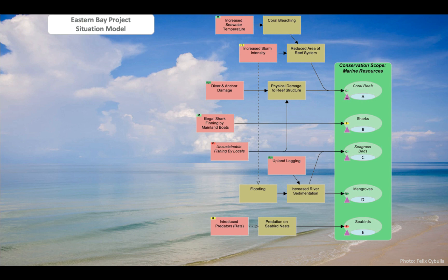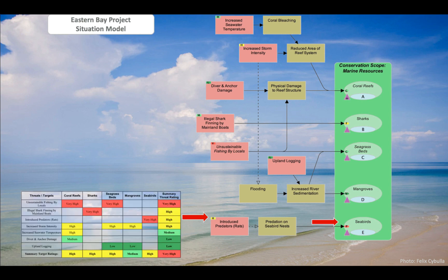For example, introduced predators here, or rats, are believed to be contributing to predation of seabird nests, which is reducing the viability of our seabird target. The threat rating of each direct threat is shown in the upper left-hand corner of each pink box. Note how this is high for introduced predators. The dashed arrow here indicates areas of uncertainty in the model where evidence is lacking about the relationship between these factors.